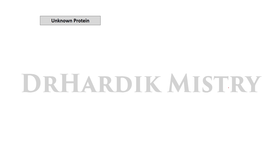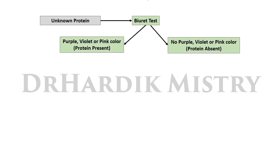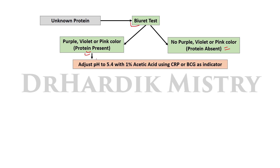Identification of unknown protein solutions: first, perform the Biuret test. If you observe purple, violet, or pink color, then protein is present. If there is no purple, violet, or pink color, protein is absent. Once you decide that protein is present, adjust the pH to 5.4 with one percent acetic acid, using CRP or BCG as indicator.